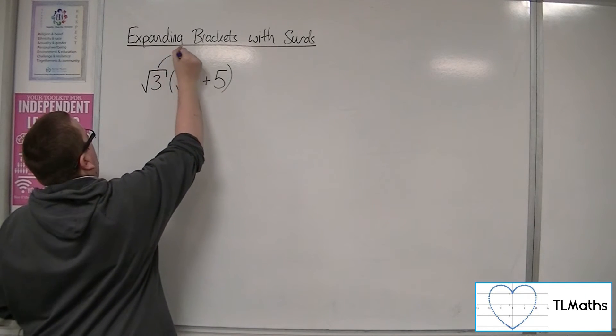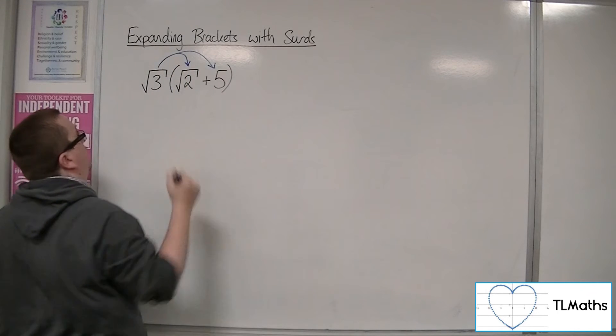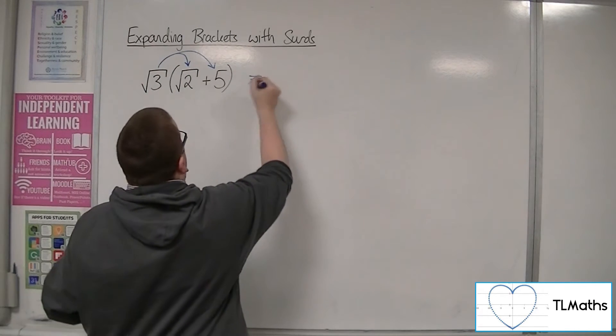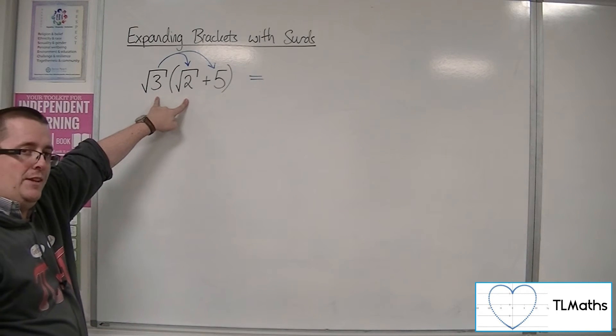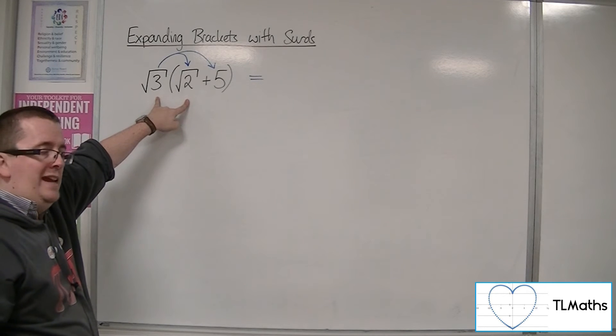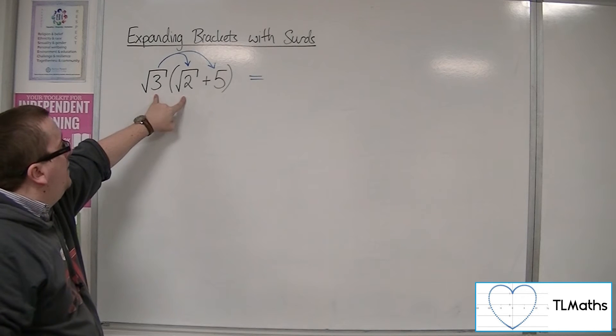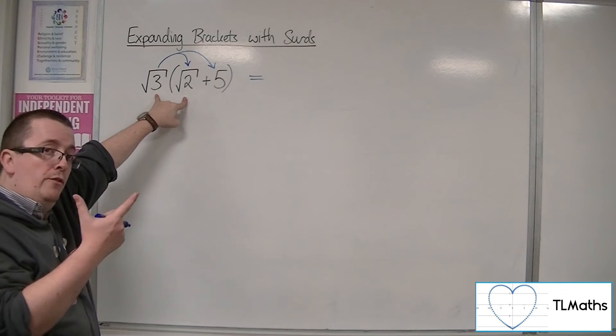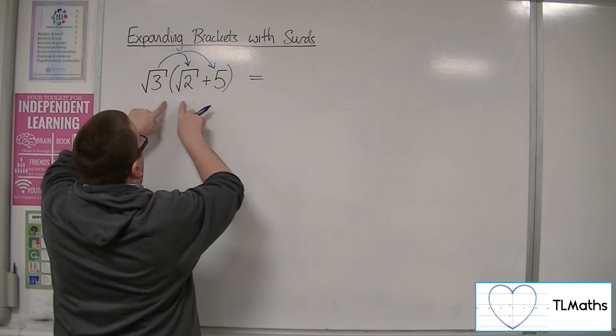But we should be able to see that it's root 3 times the root 2 and root 3 times the 5. So root 3 times root 2. Now, if you can split a surd apart into two surds multiplied together, then you can do the reverse process and bring them together. So this is the same thing as root 6.